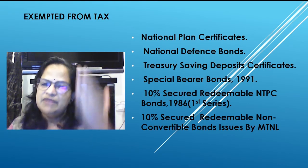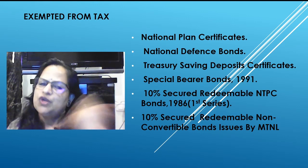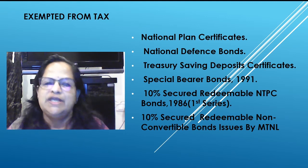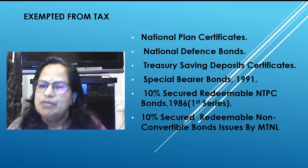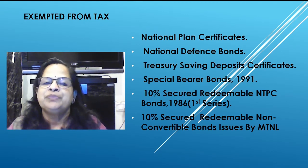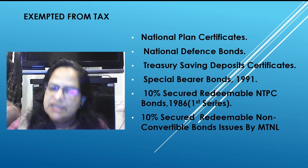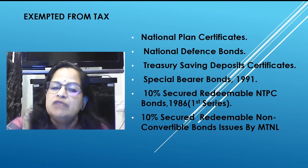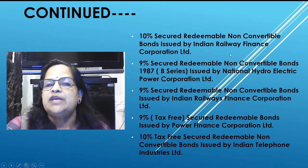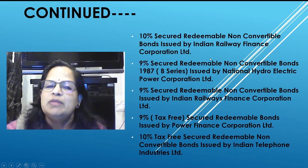Exempted from tax — if these items appear in the question, do not include them in computation. The list includes: National Plan Certificate, National Defence Bonds, Treasury Saving Deposit Certificates, Special Bearer Bonds 1991, 10% Secured Redeemable NTPC Bonds 1986 per series, and 10% Secured Redeemable Non-Convertible Bonds issued by MTNL.